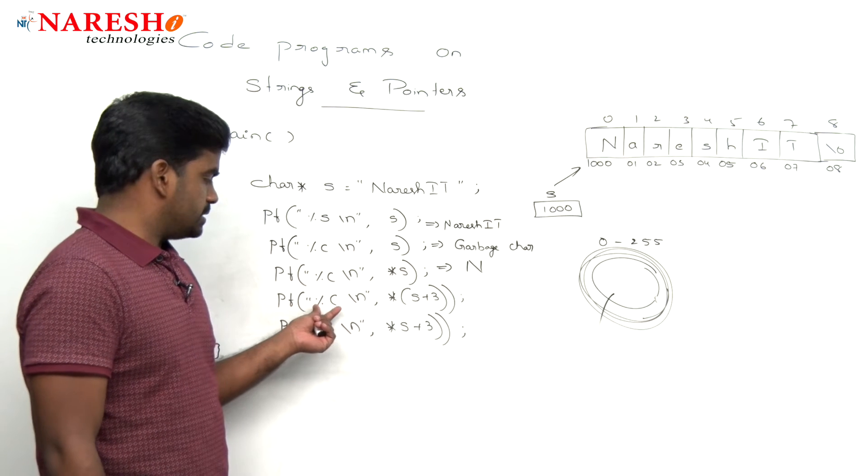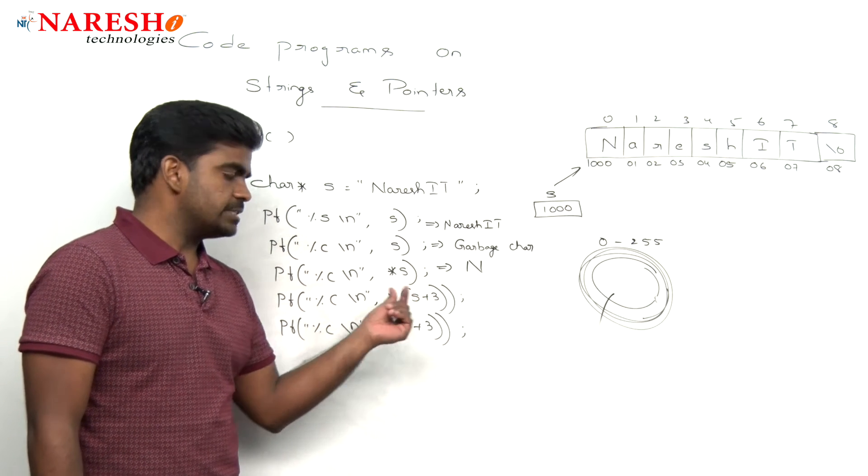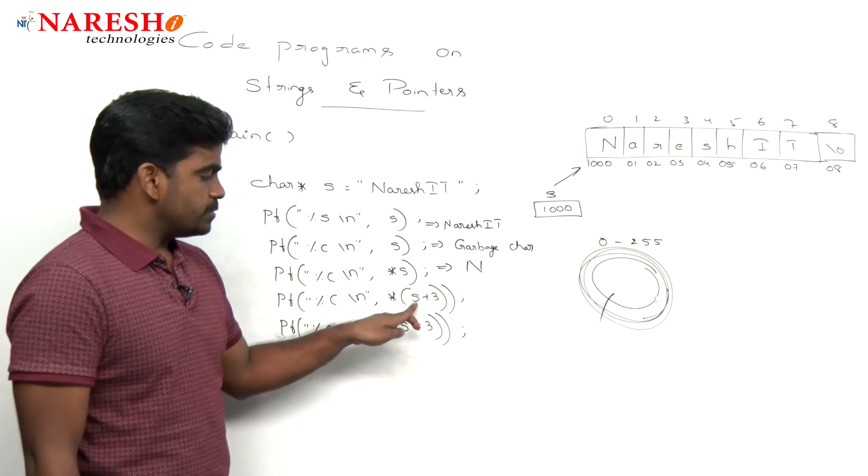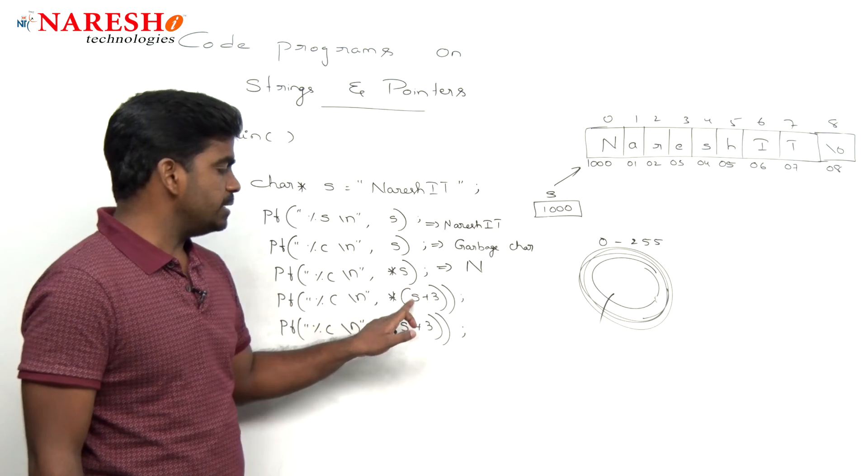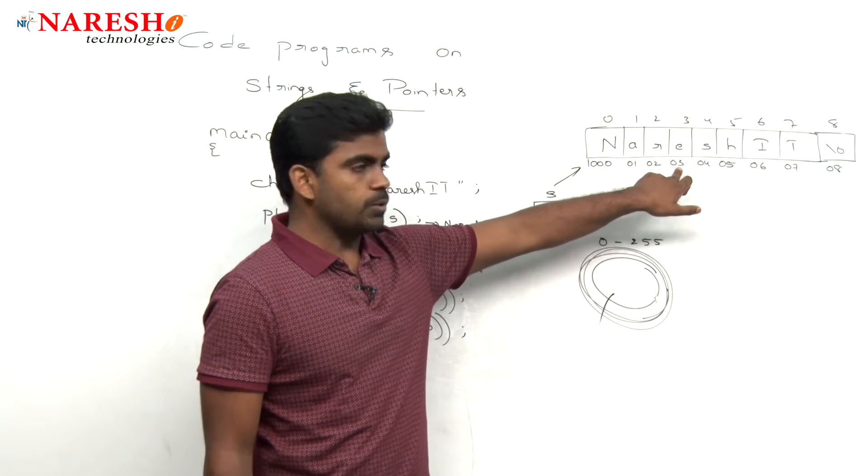And next one, here percentage C is a character only, but this is pointer S plus 3. Here, S value is 1000, 1000 plus 3. Plus 1, plus 2, plus 3 equals 1003.